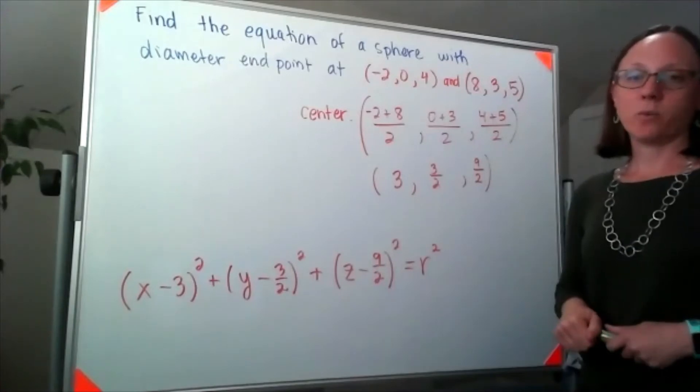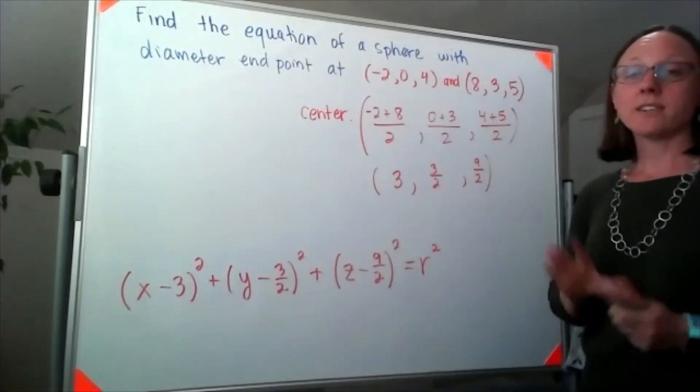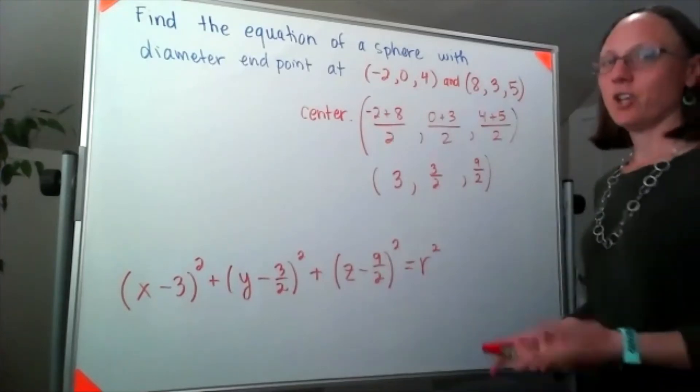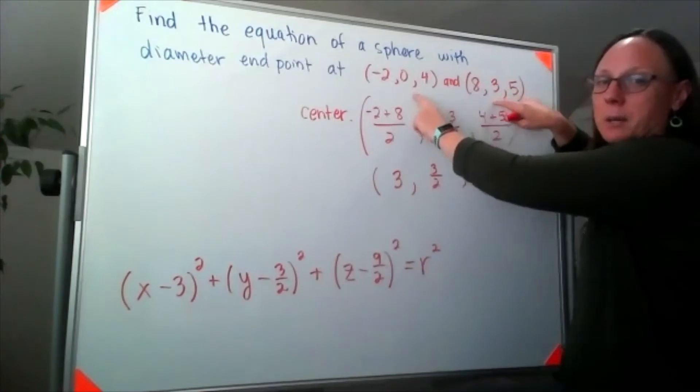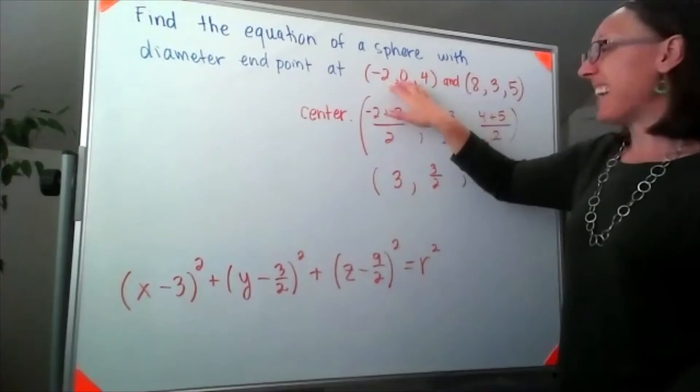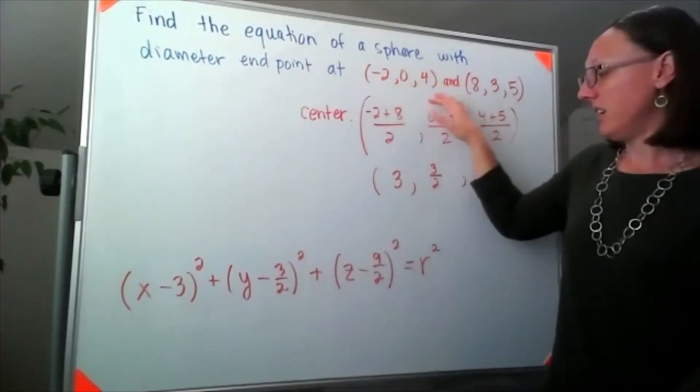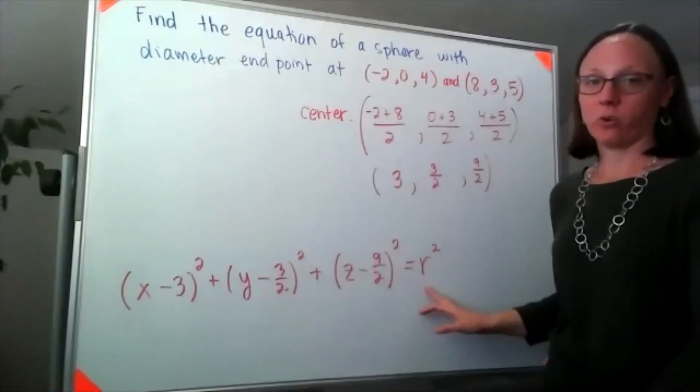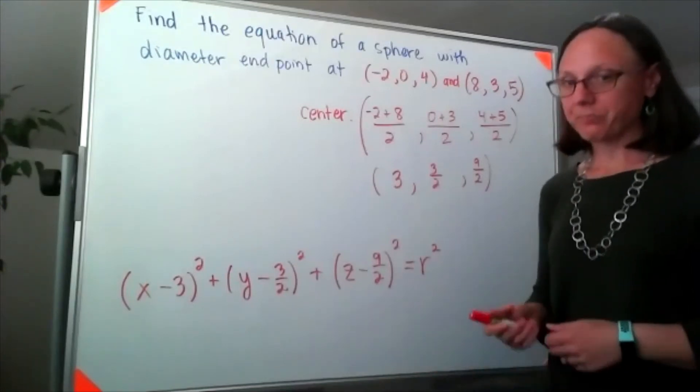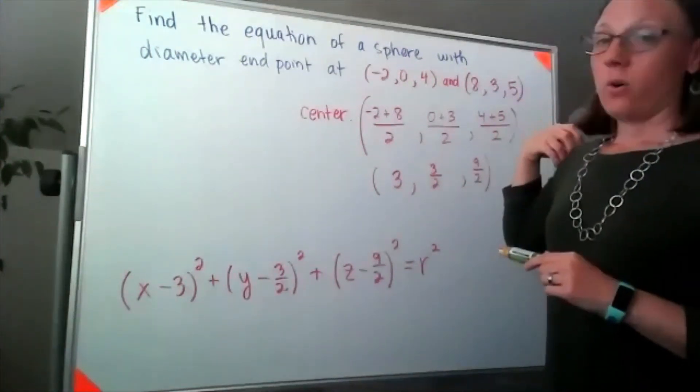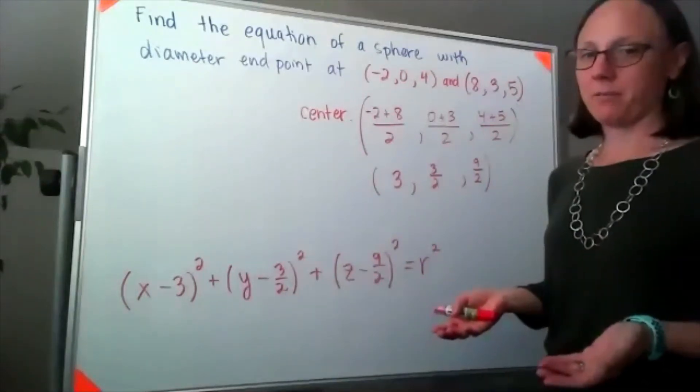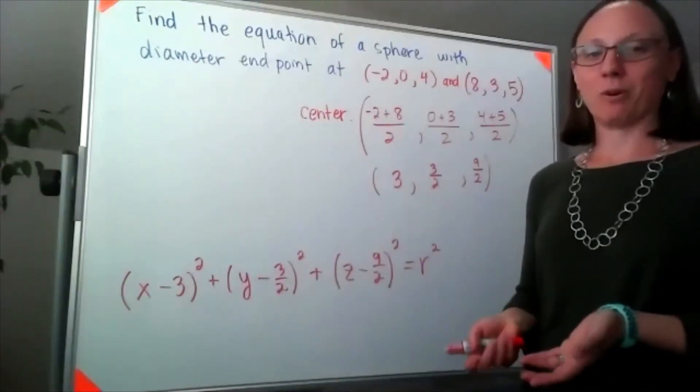There are a couple of different ways that we can find the radius. One is certainly by using the distance formula. The other option is we know that both of these points must satisfy this equation. So that means that if we plugged either of these points in, we can actually get a value for r squared without having to use the distance formula. Essentially, we're doing the same arithmetic as if we were doing the distance formula. This just always feels a little more straightforward for me.